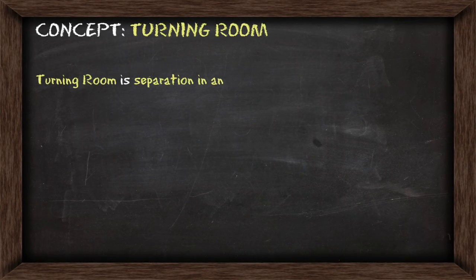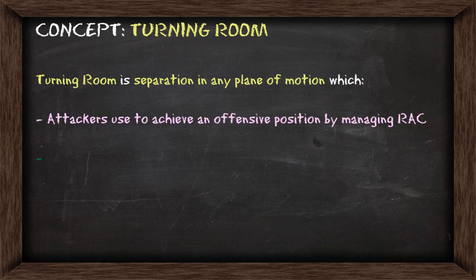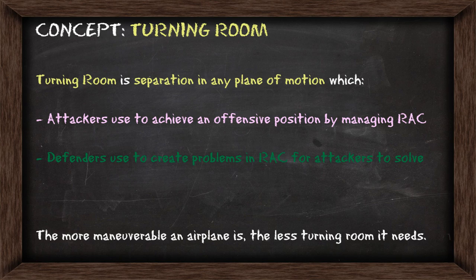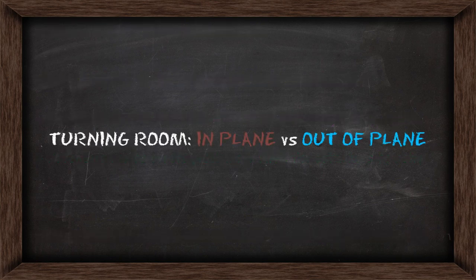Turning room is a separation in any plane of motion which attackers can use to achieve an offensive position by managing range, angles and closure, and defenders can use to create problems for attackers to solve. The more manoeuvrable an airplane is, the less turning room it needs. The two types of turning room are in-plane and out-of-plane.